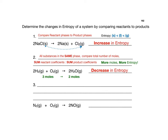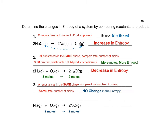Last example, number three. Always start off in the same place — compare reactant phases to product phases. Right away, you should notice that all substances are in the same phase, so move on to the second step: compare the total number of moles. There is a total of two moles on the reactant side and a total of two moles on the product side. When we have the same total number of moles and all substances are in the same phase, there is no change in entropy.